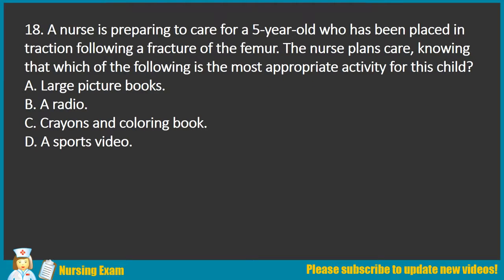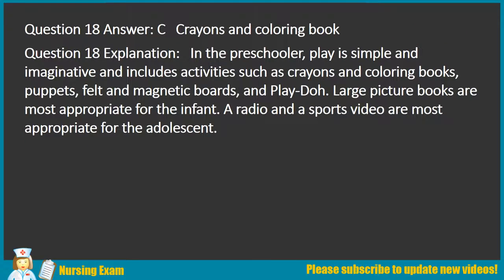Question 18. A nurse is preparing to care for a 5-year-old placed in traction following a fracture of the femur. Which of the following is the most appropriate activity for this child? A. Large picture books. B. A radio. C. Crayons and coloring book. D. A sports video. Answer: C. Crayons and coloring book. Explanation: In the preschooler, play is simple and imaginative and includes activities such as crayons and coloring books, puppets, felt and magnetic boards, and Play-Doh. Large picture books are most appropriate for the infant. A radio and a sports video are most appropriate for the adolescent.